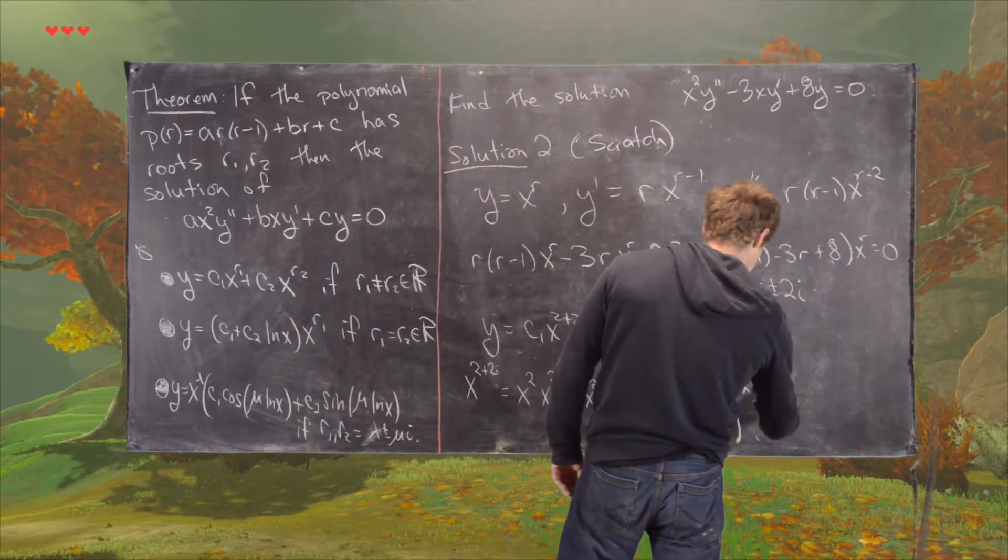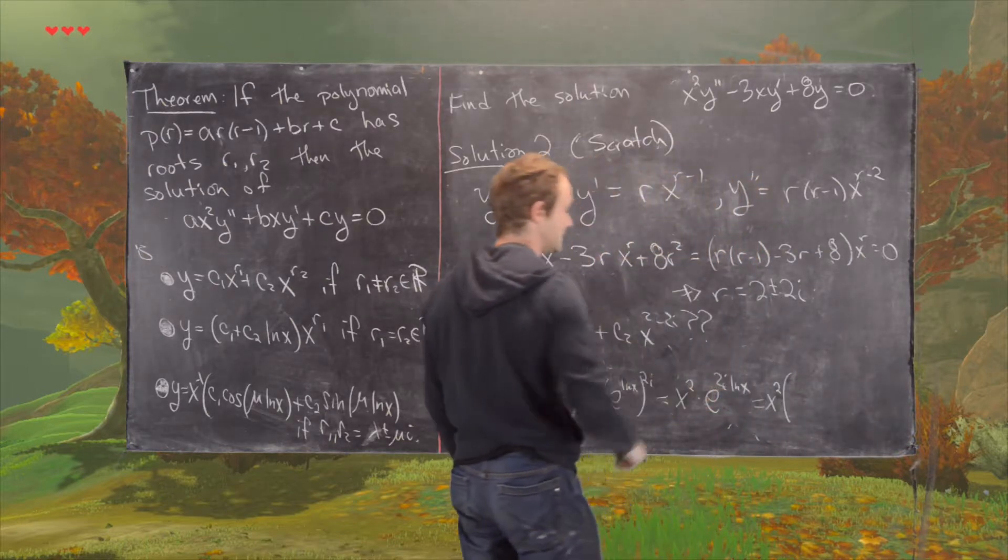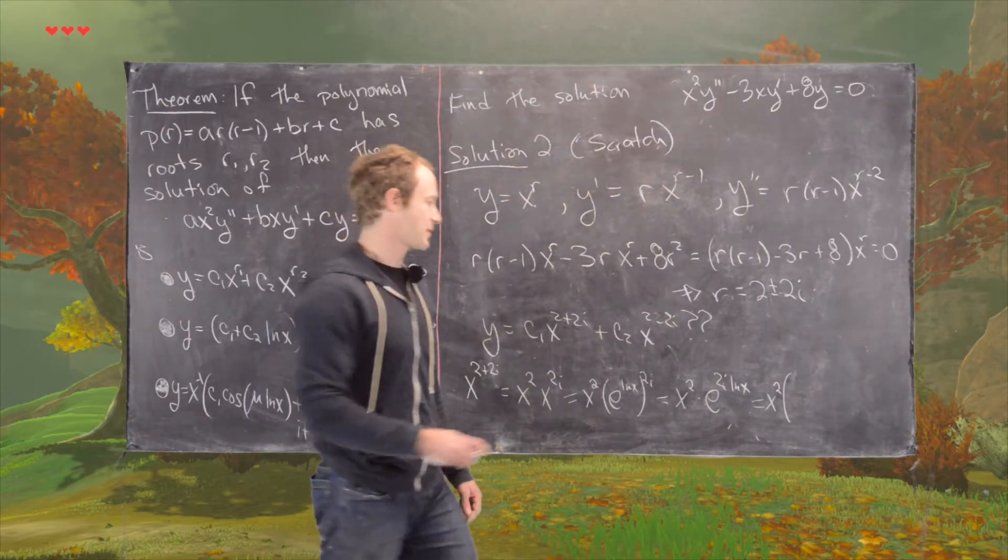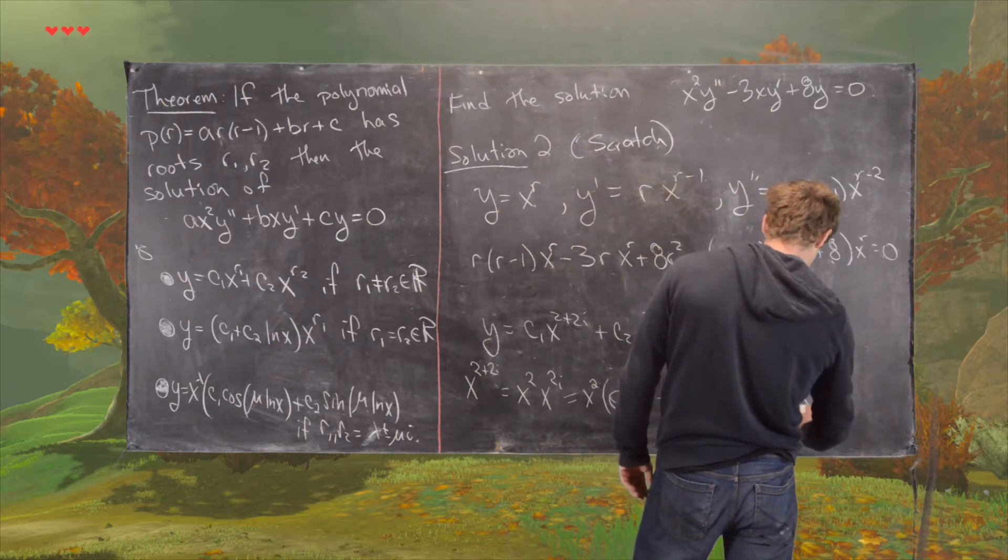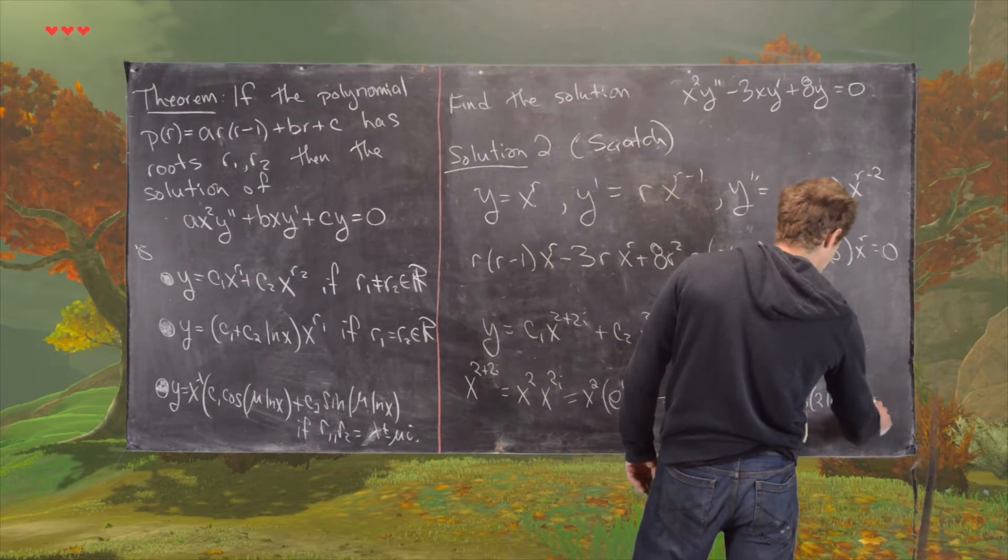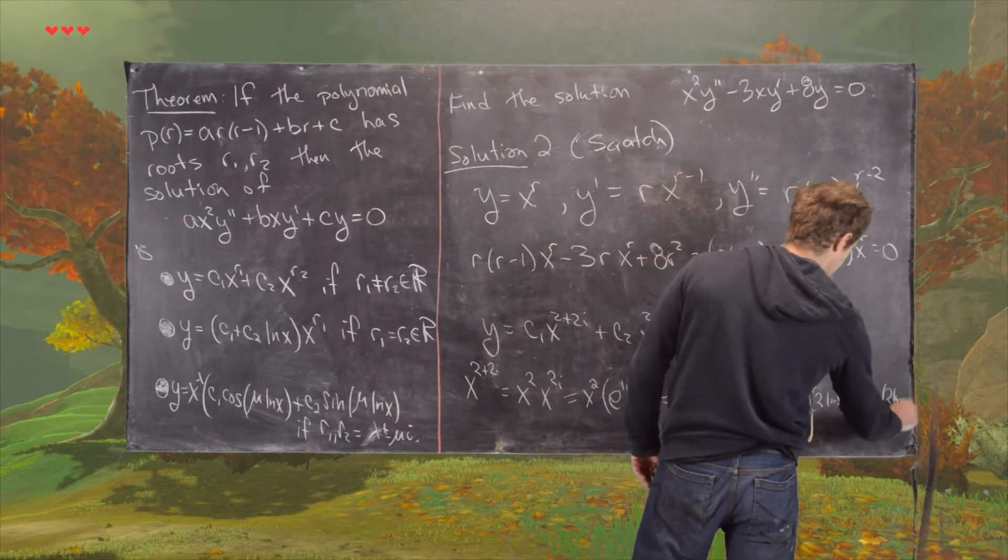But now that's going to give us x squared times, now using Euler's formula, we have cosine 2 natural log of x plus i sine 2 natural log of x.